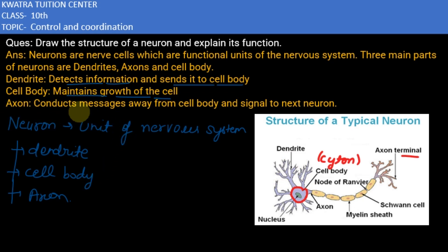Now comes to axon. Axon conducts messages away from the cell body and signals to next neuron. This elongated part conducts message away from the cell body, takes the message and transfers it to the next neuron. So these are the functions of the parts of neuron. Thank you.